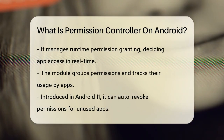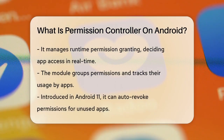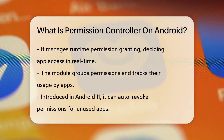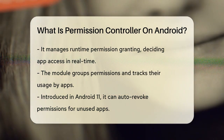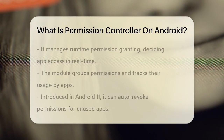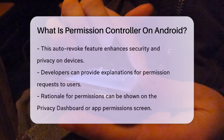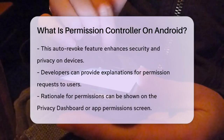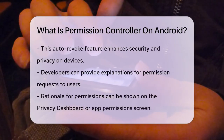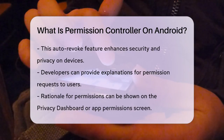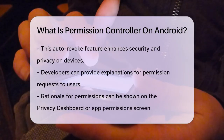One of the notable features of the permission controller is its ability to auto-revoke permissions for apps that haven't been used for a long time. This feature was introduced in Android 11 and helps maintain your device's security and privacy by automatically removing unused permissions.